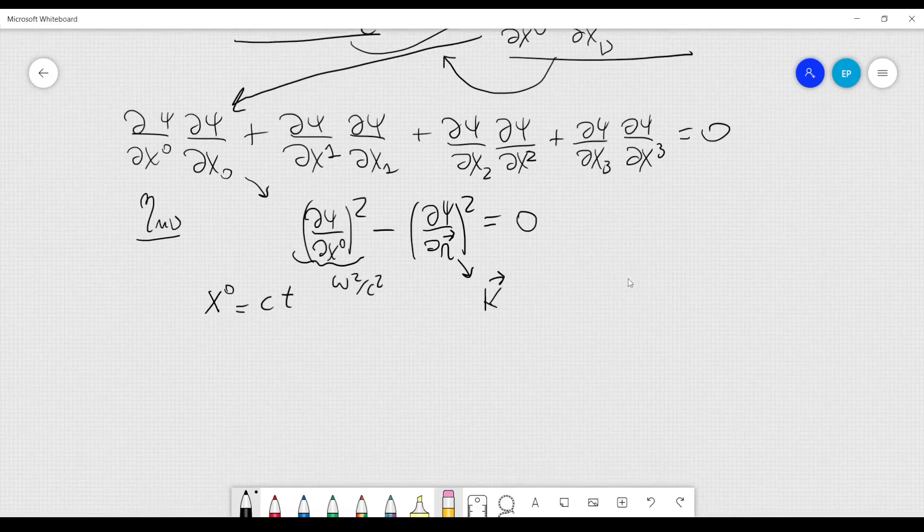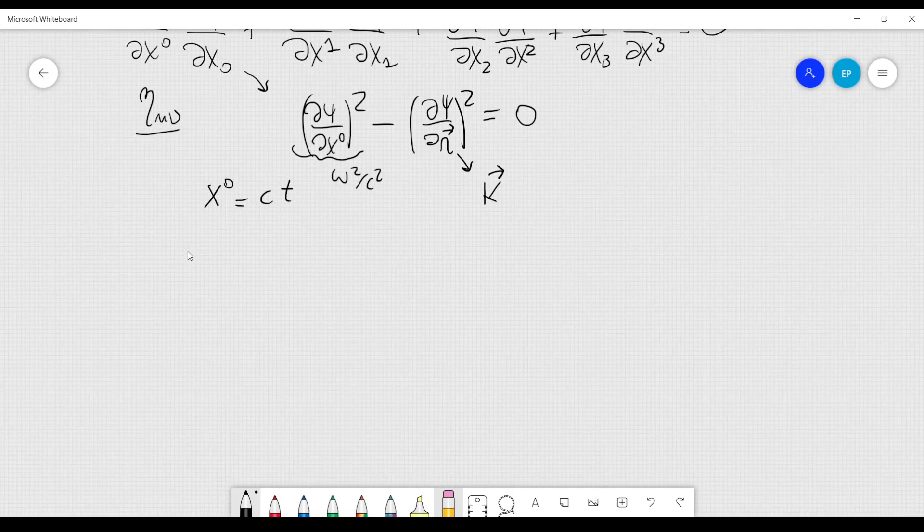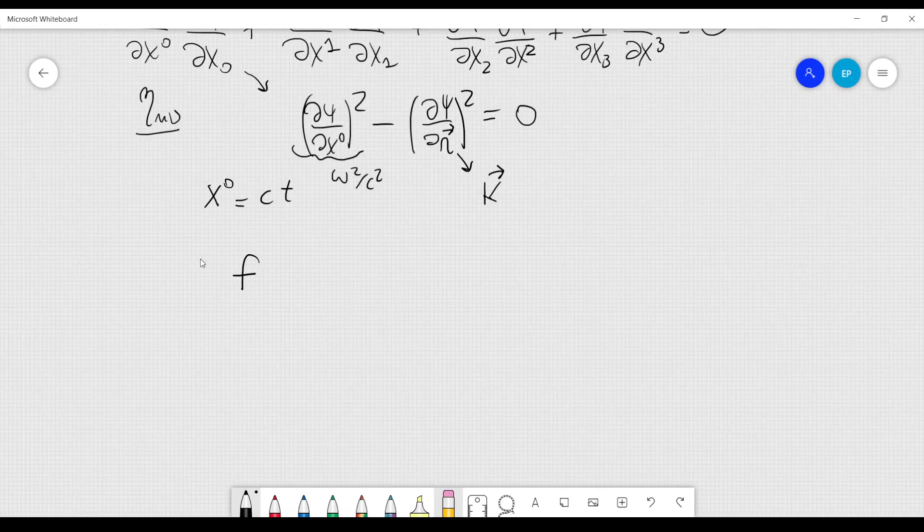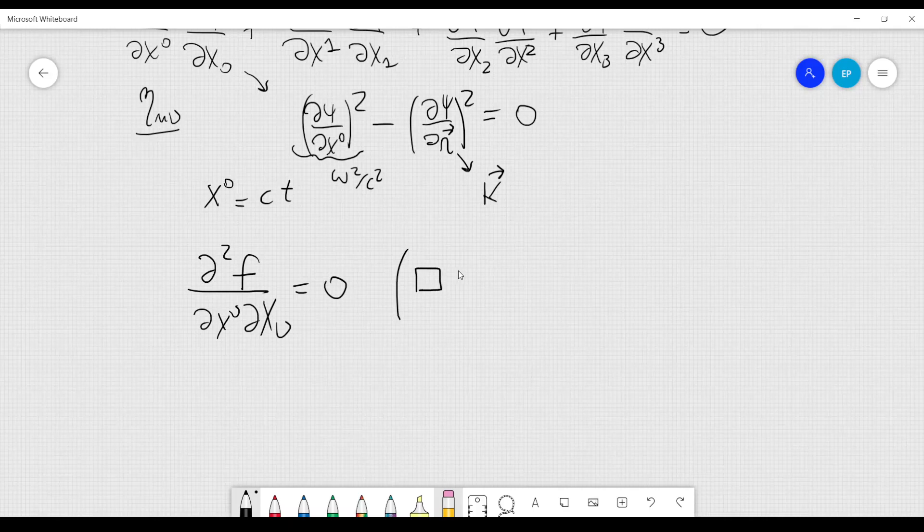But we can also derive the Iconal equation in a different manner. We can rewrite the wave equation. And the wave equation, using the function that I called f, can be written like this. It is del squared over dx nu dx nu. It can be written in tensor notation. Or it can also be written with this symbol, which represents a square. And it is called the D'Alembert operator.